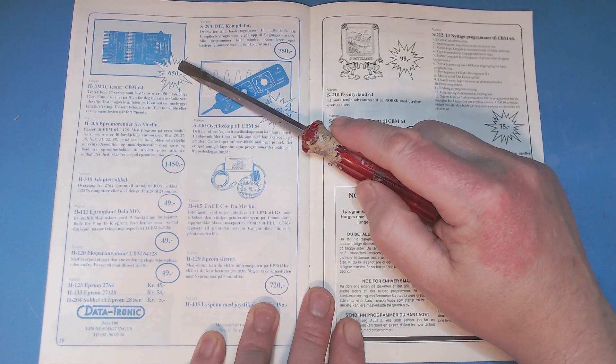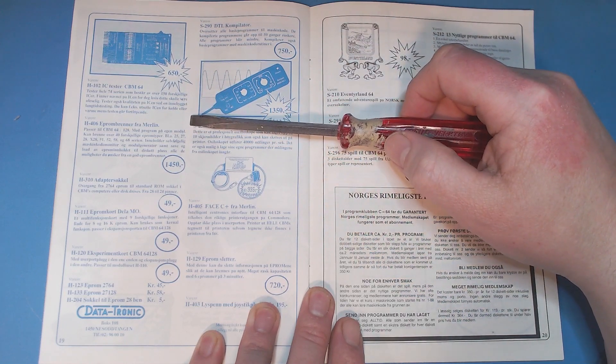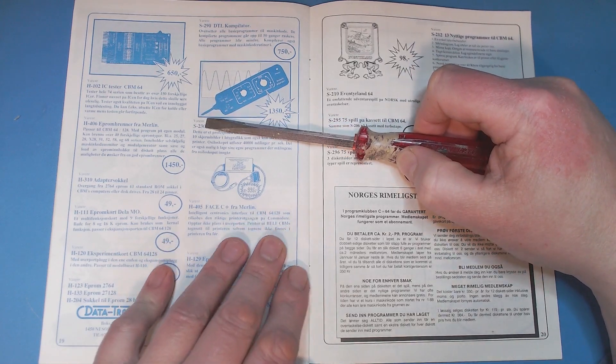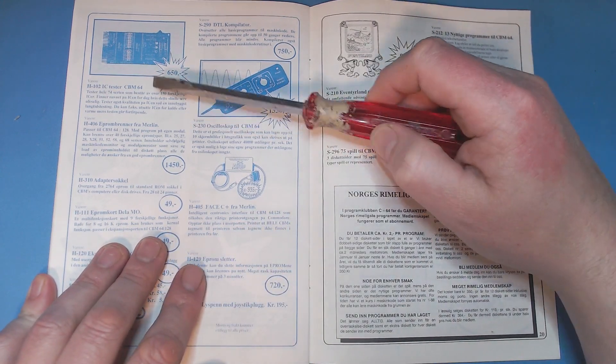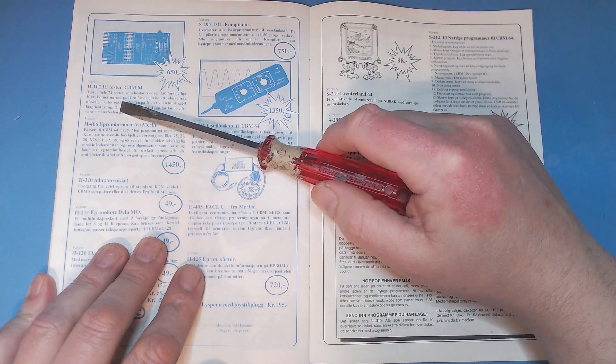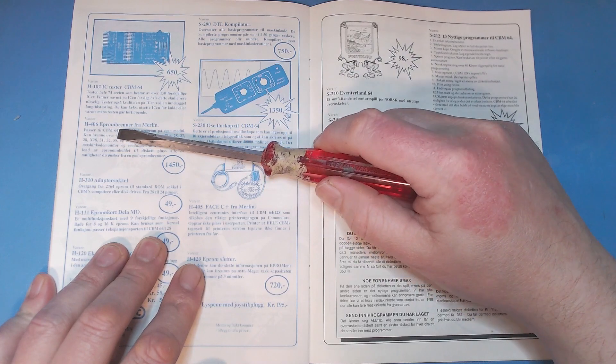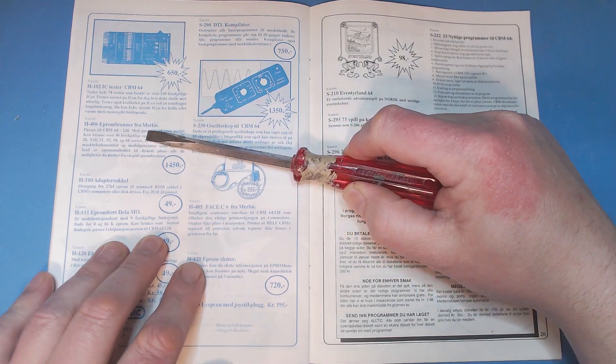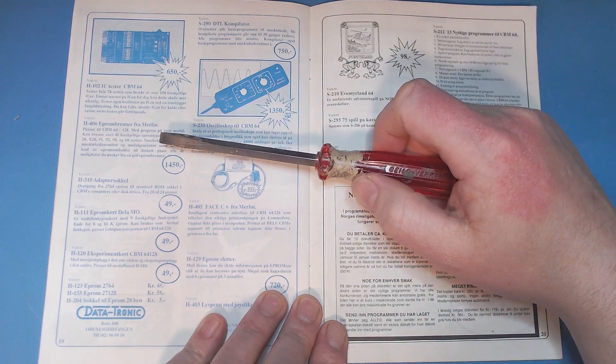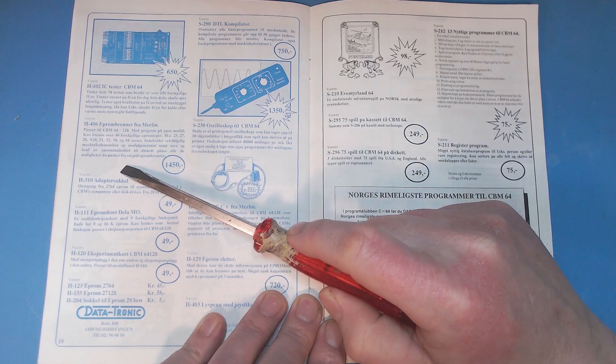This was some more useful stuff, and this was the kind of stuff that I at least dreamt of owning back in the day. IC tester for all the 74 variations of logic. They also have this bigger EPROM burner from Merlin that actually could write to bigger EPROMs and also handled a lot of the EPROM variations.